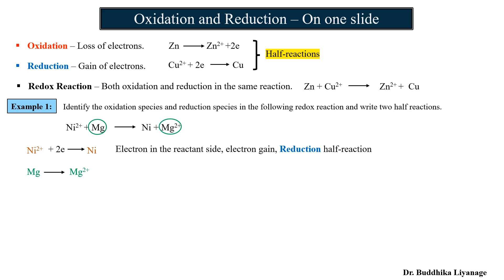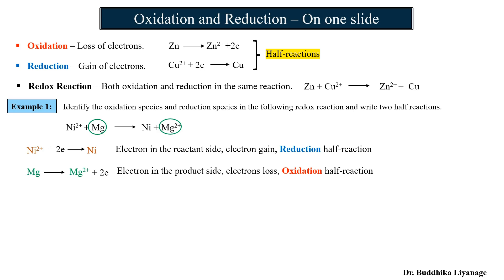Next, let's focus on the second reactant, magnesium. Magnesium is on the reactant side, and Mg²⁺ is on the product side. Magnesium goes from zero charge to two plus by losing two electrons. Electron loss is called oxidation, so this is the oxidation half reaction.